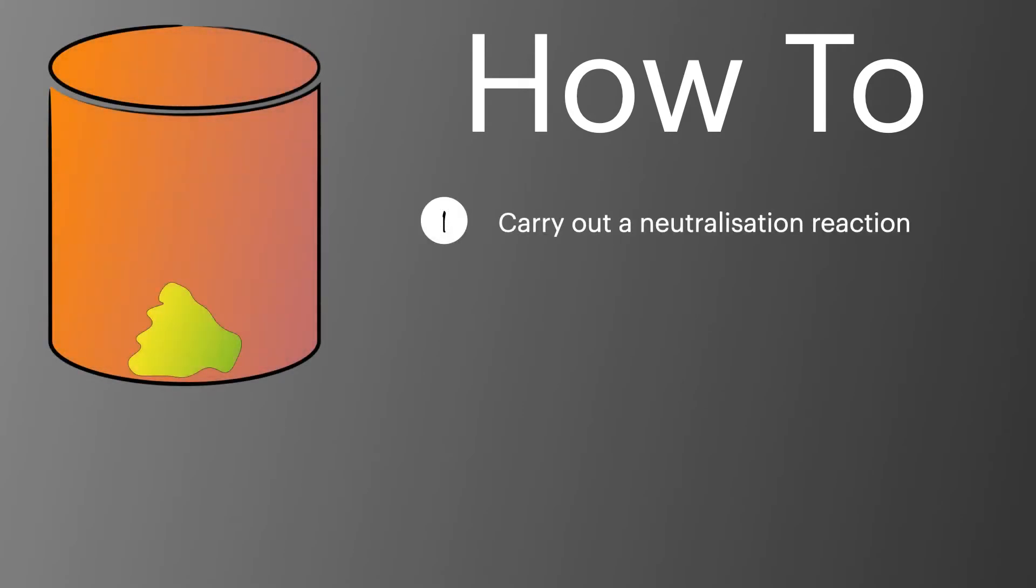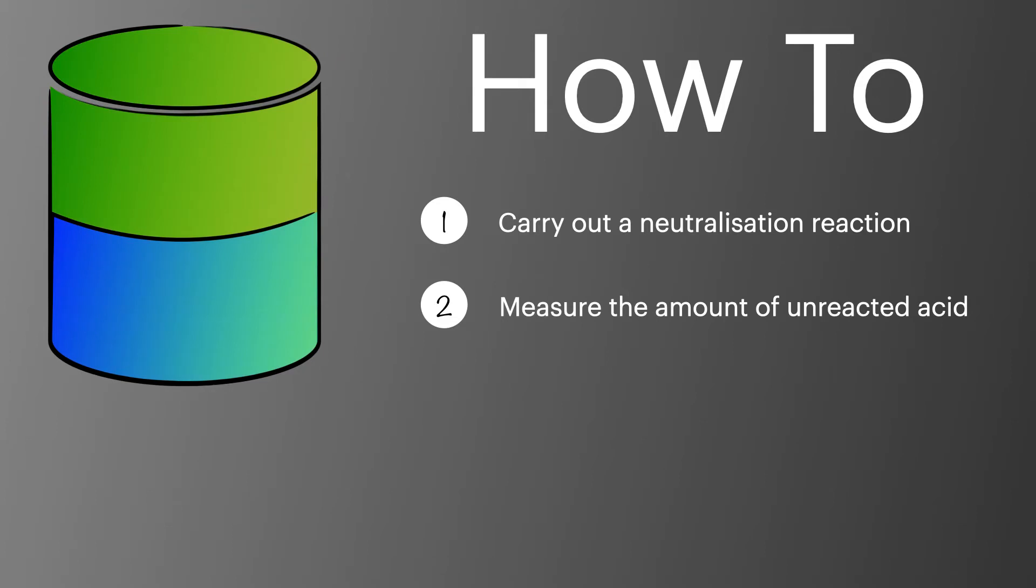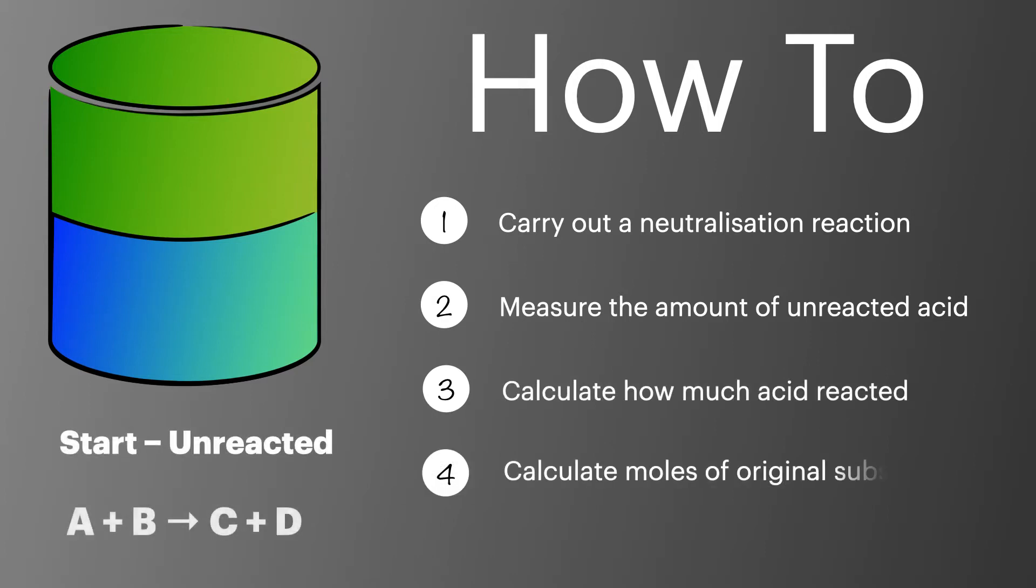So let's look at how we go about carrying out a back titration. First we're going to do a neutralization reaction where we take our sample and react it with an acid to neutralize it. We'll have some acid left over and then we'll measure the amount of this acid using a titration. Once we've got that value we'll calculate how much acid actually reacted and then use that value to calculate the moles of the original substance.